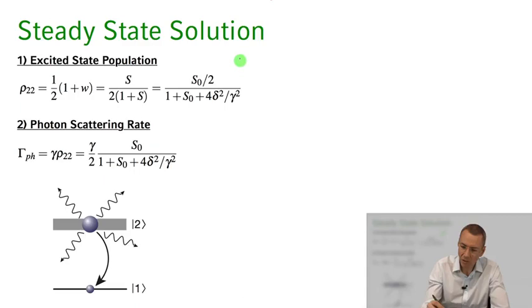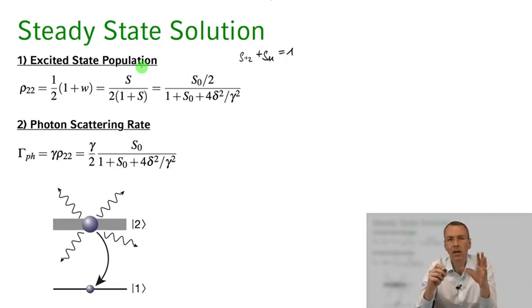So I take my steady state inversion, making use of Rho plus Rho equaling 1. I can rewrite my occupation in the excited state as 1 half times 1 plus the inversion. We had calculated what the steady state inversion was and now I can turn this into a population of the excited state in the steady state. So this is the excited state, steady state population of my system after all this kind of initial oscillations have been damped away.